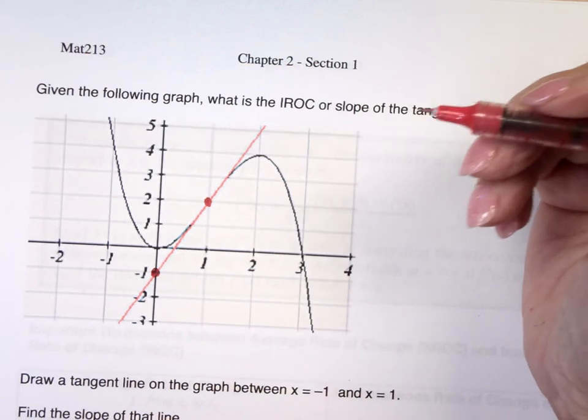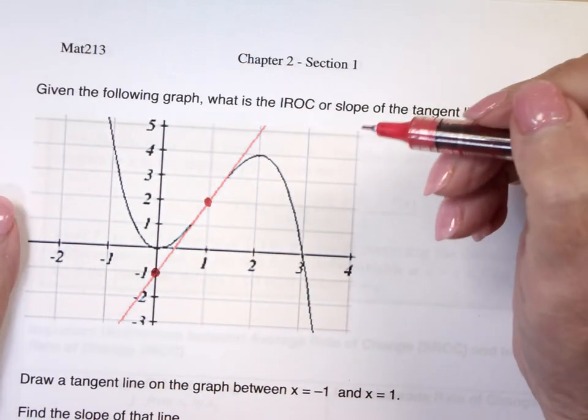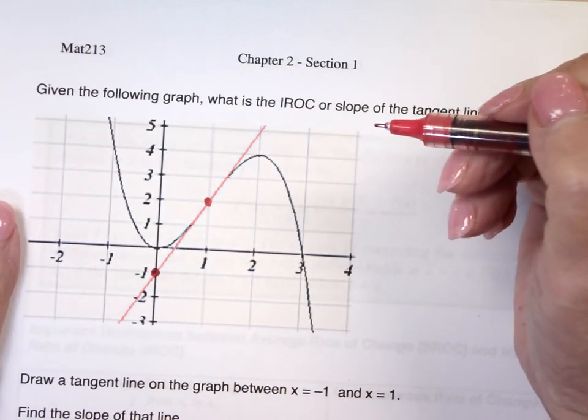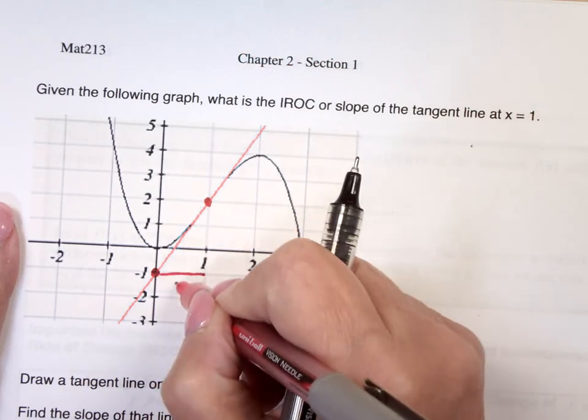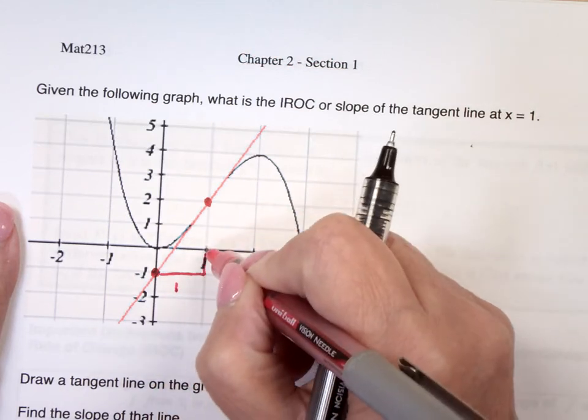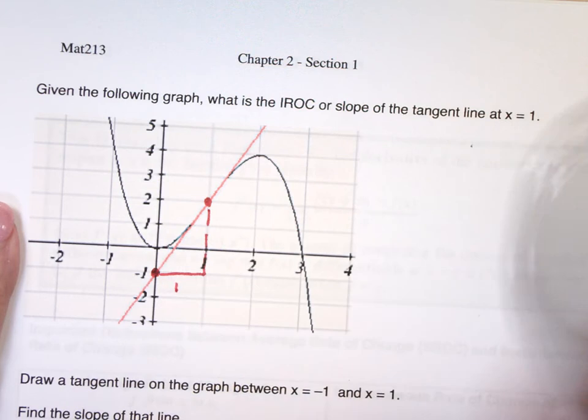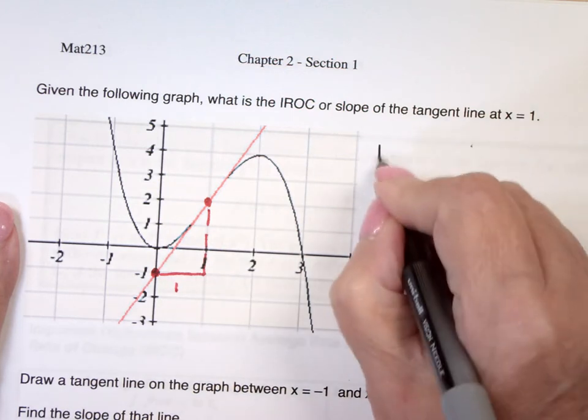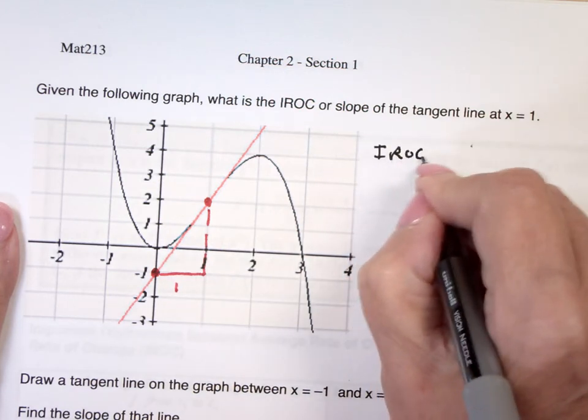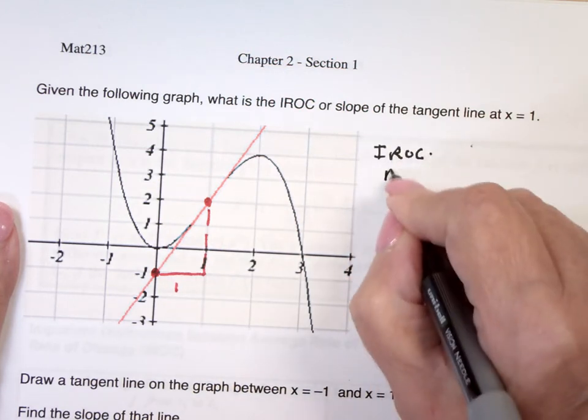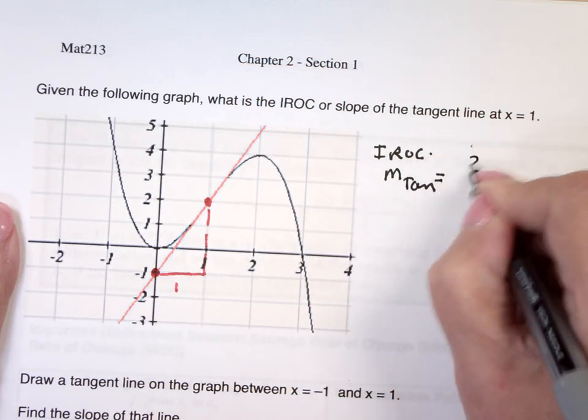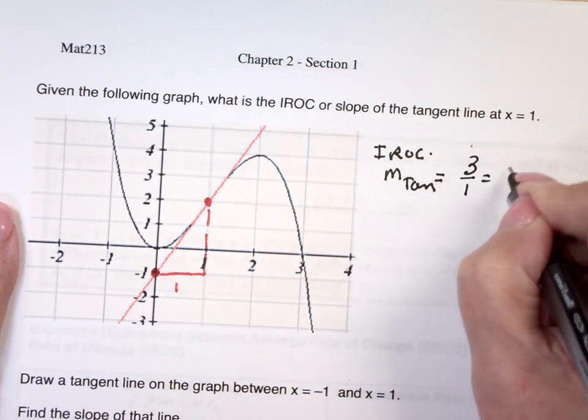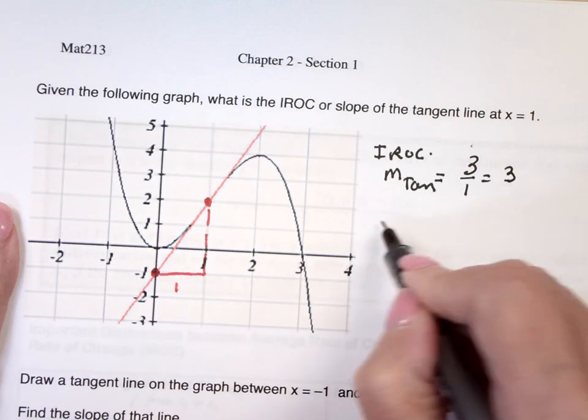I just need to have two points, because then I can calculate the slope of that line. So I notice it's over 1, it's not kinky, which is good, and up 1, 2, 3. So IROC, which happens to be the slope of the tangent, is rise over run, 3 over 1, or 3.